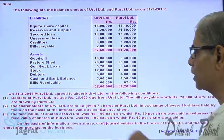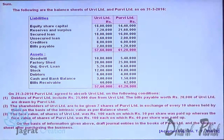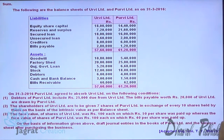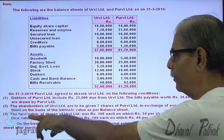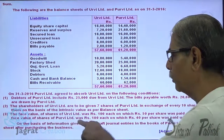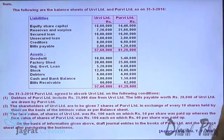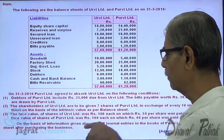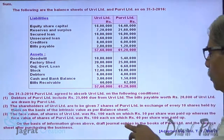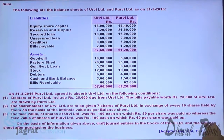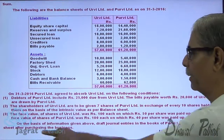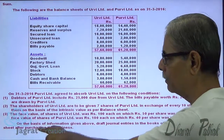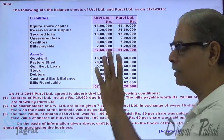The face value of shares of Purvi Limited is 100 each, but 50 per share is paid up — very important. Whereas the face value of shares of Urvi Limited is 100, and 40 per share is paid up. On the basis of the information given above, write journal entries in the books of Purvi Limited and prepare the balance sheet after the absorption process.